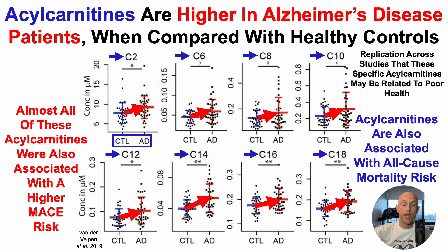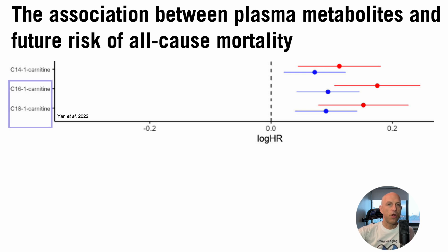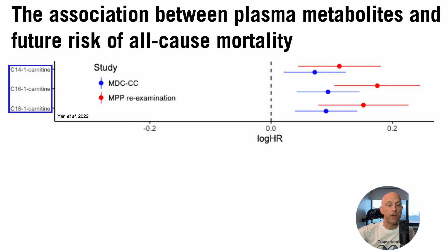Some of these acylcarnitines are also associated with an increased all-cause mortality risk, as seen in the paper on the association between plasma metabolites and future risk of all-cause mortality. In this study, they identified three acylcarnitines — C14, C16, and C18, the unsaturated versions of those fatty acids — in association with all-cause mortality risk. This study included two different studies as an internal replication: the MDC-CC study with about 3,800 people, an average age of 58 years, and a 22-year follow-up.